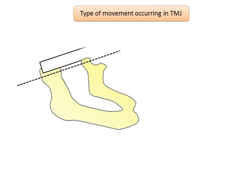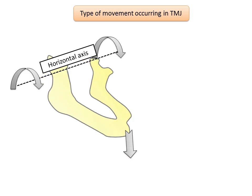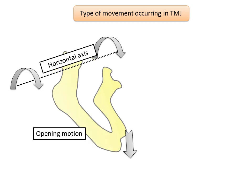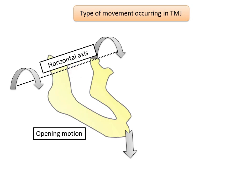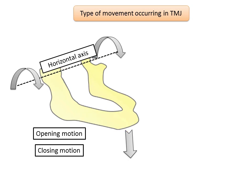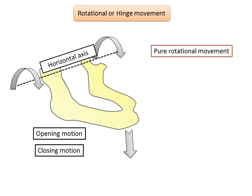The transverse axis runs horizontally from the right side of the mandible to the left. Rotation around this axis is seen during protrusive movement. Mandibular movement around the horizontal axis is an opening and closing motion, referred to as hinge movement. The horizontal axis around which it occurs is termed the hinge axis. The hinge movement is the only example of mandibular activity in which a pure rotational movement occurs.